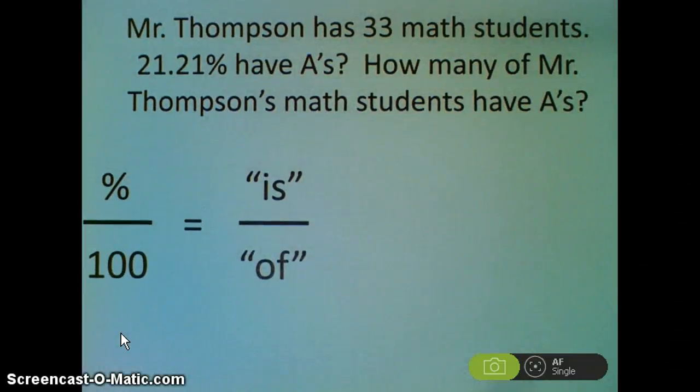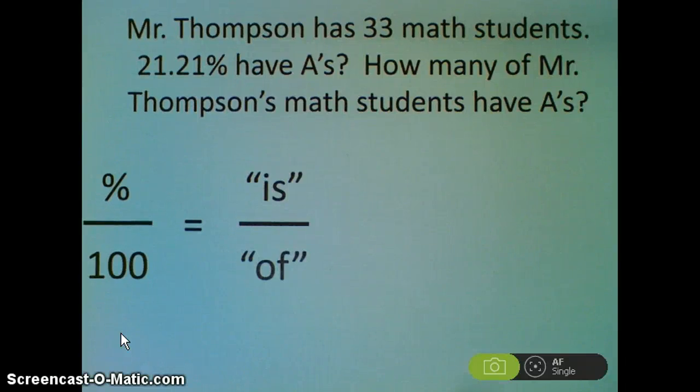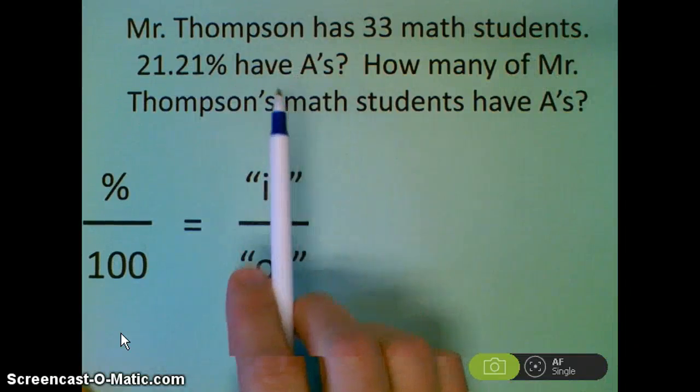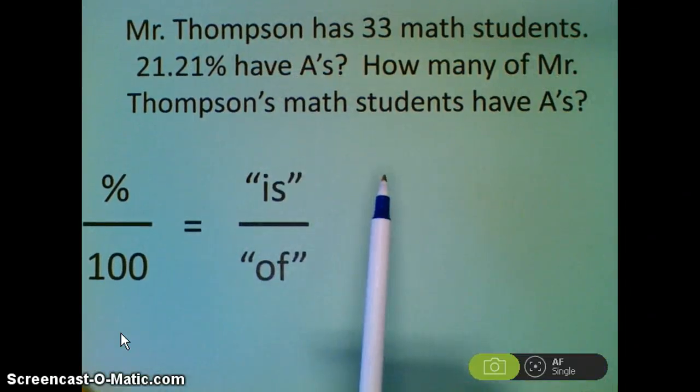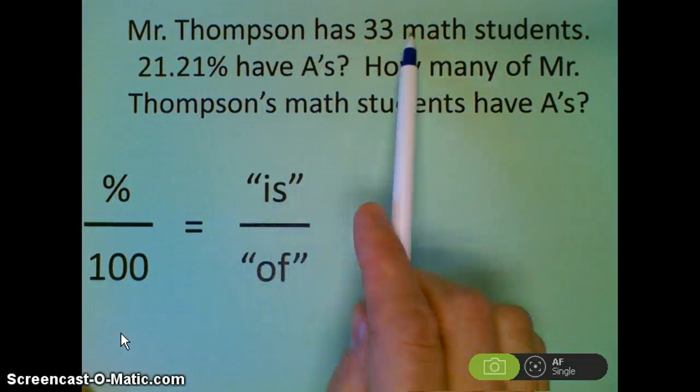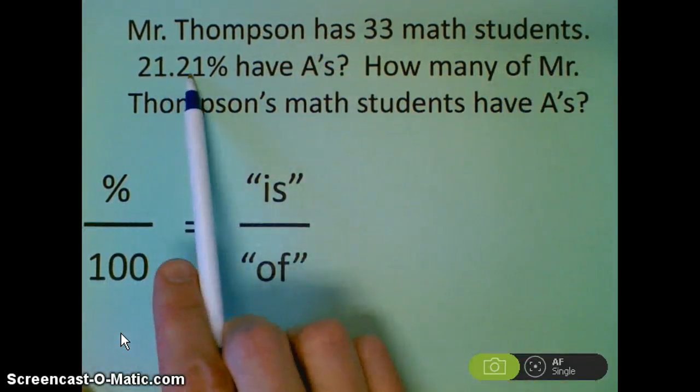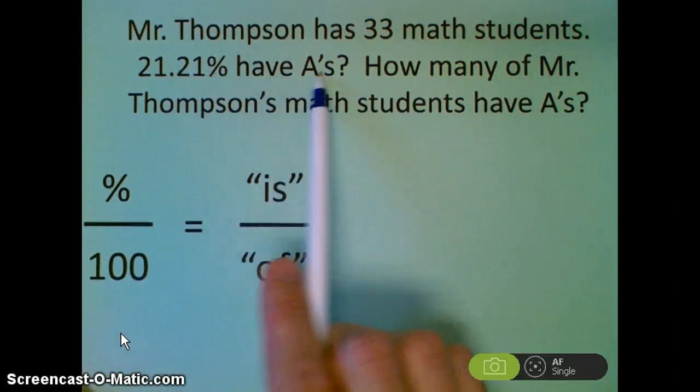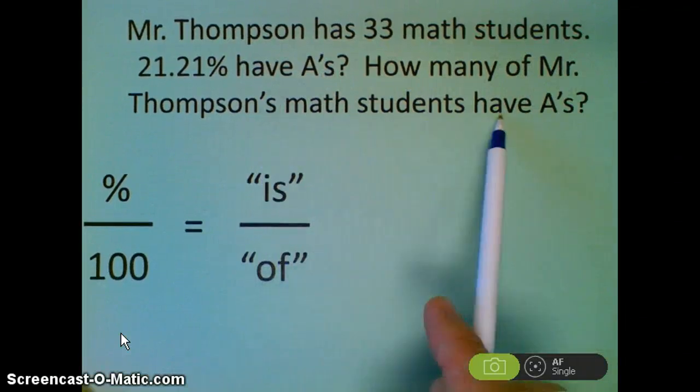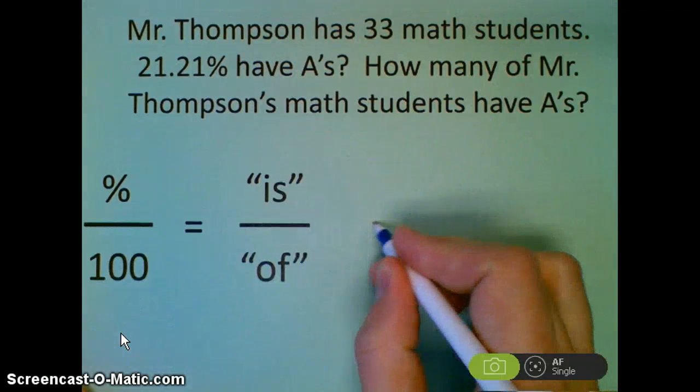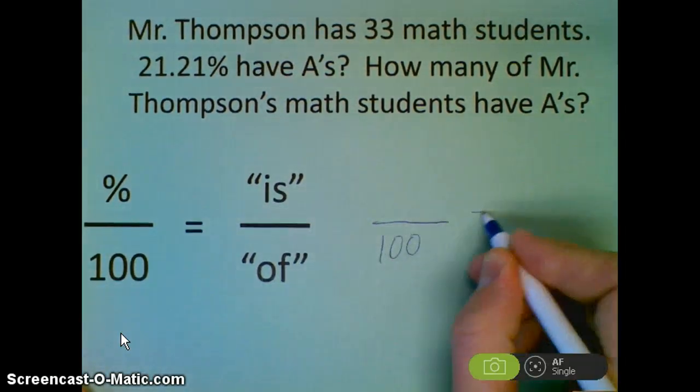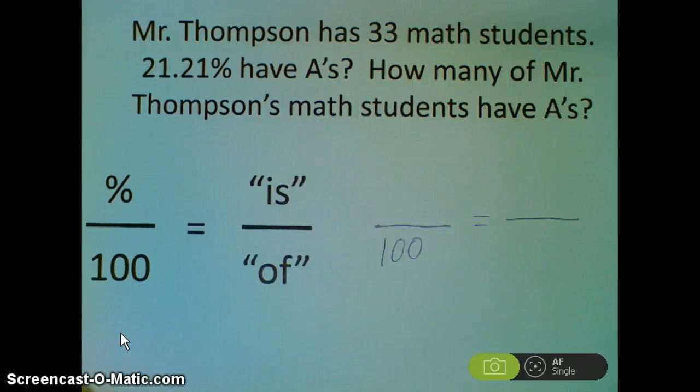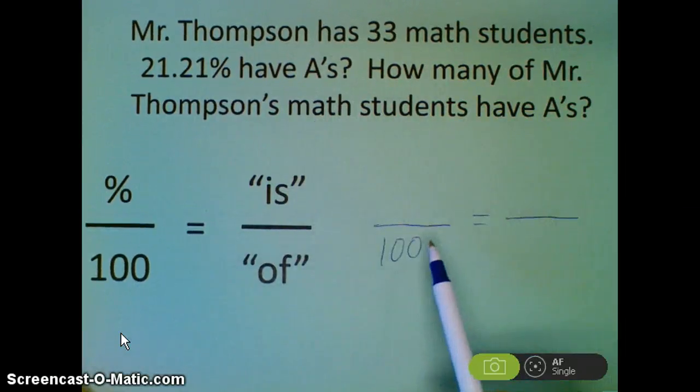Okay, on to the word problems. This is what we need to be able to solve. We understand is over of, I hope. You don't have to write down this full problem, but I want you to try this problem on your own. Mr. Thompson has 33 math students. 21.21%, so 21 and 21 hundredths of a percent have A's. How many of Mr. Thompson's math students have A's? So try it. The hundred is still the same. We just have to figure out which numbers that we're given go where in our is over of proportion.